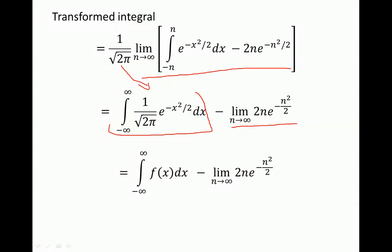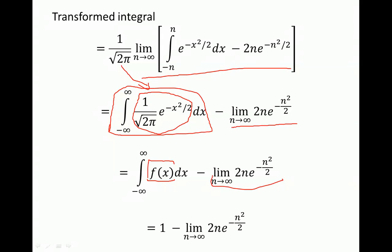The function inside the first integral is just the probability density function of a standard normal random variable, so we can express it as f of x. This integral equals 1 because we are summing the probability density function over the whole range of x — the sum of all probabilities must equal 1.